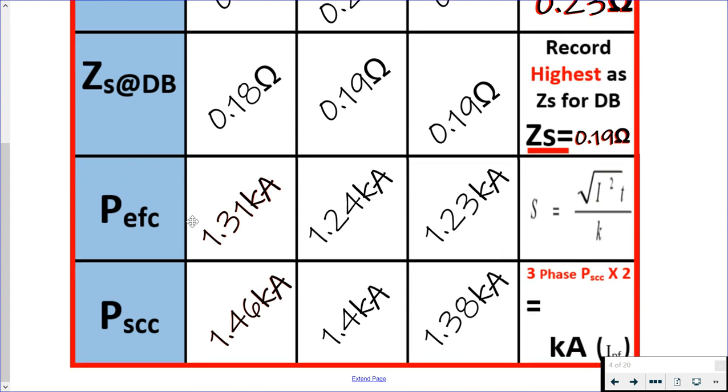Looking at our prospective earth fault current, we have 1.31 kilo amps measured, and that 1.31 kilo amps, this is where we're going to be utilizing it. We're going to be using it in this adiabatic equation to make sure that our protective conductor is the right size in order to meet what's called the thermal constraints, to make sure we're not going to damage that insulation under fault conditions.